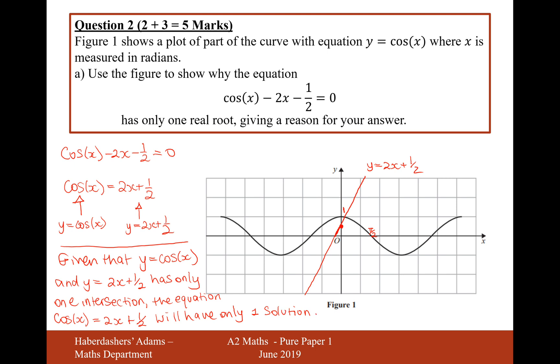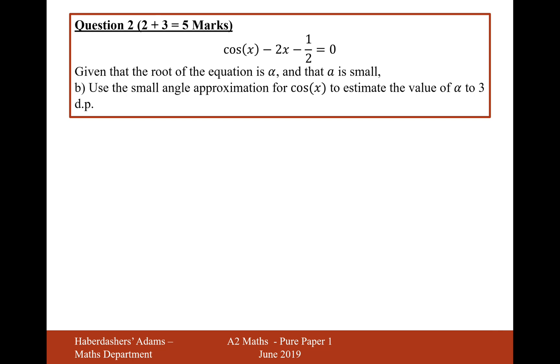Okay there we are, so that's the answer for part a. Let's now move on to part b. Given that the root of the equation is alpha and that alpha is small, use the small angle approximation for cos x to estimate the value of alpha to three decimal places.